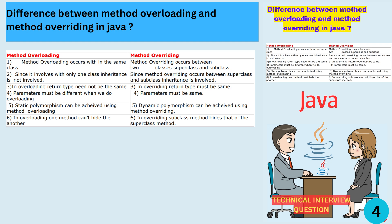Can you explain the difference between method overloading and method overriding in Java? Overloading occurs within a single class, whereas overriding occurs between two classes. Overloading does not require inheritance, but overriding does. The return type can be different in overloading, but it must be the same in overriding. Parameters in overloading must be different, but they must be the same in overriding. Overloading achieves static polymorphism, while overriding achieves dynamic polymorphism.